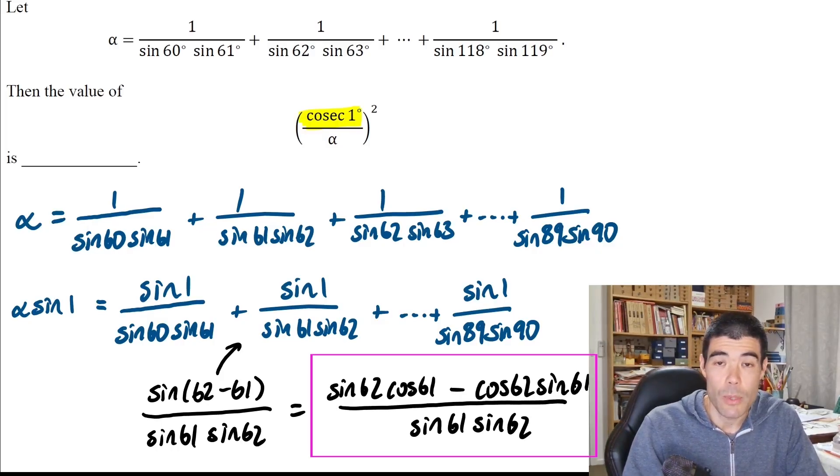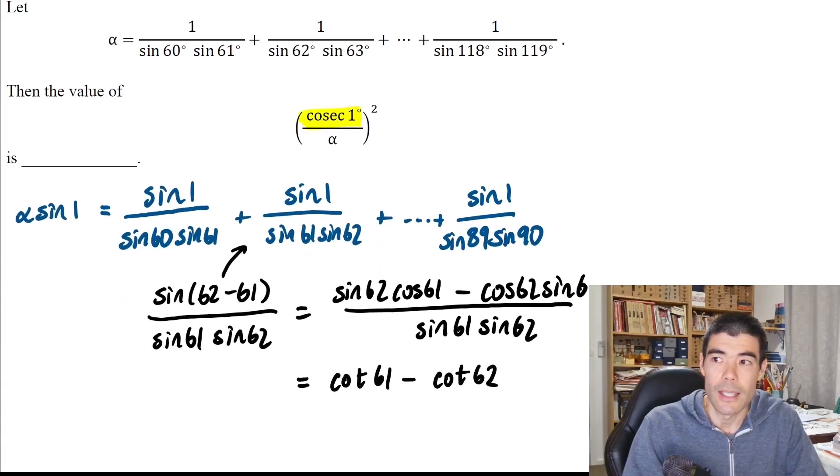Then this fraction can be split into the difference of two fractions. In the first one, sine 62 cancels, and in the second one, sine 61 cancels, leaving cosine 61 over sine 61 minus cosine 62 over sine 62. That is cotangent of 61 minus cotangent of 62.